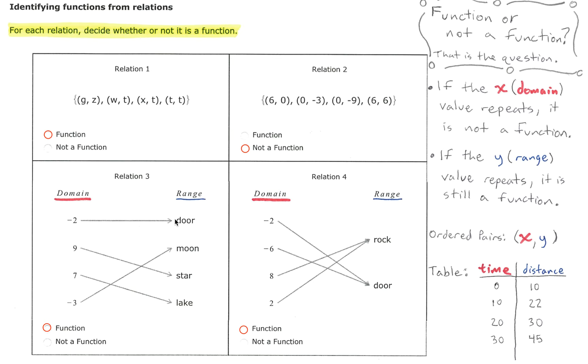Negative 2 points only at door, 9 points only at star, 7 points only at lake, and negative 3 points only at moon. Therefore we have a function because each domain value points only at one value in the range.